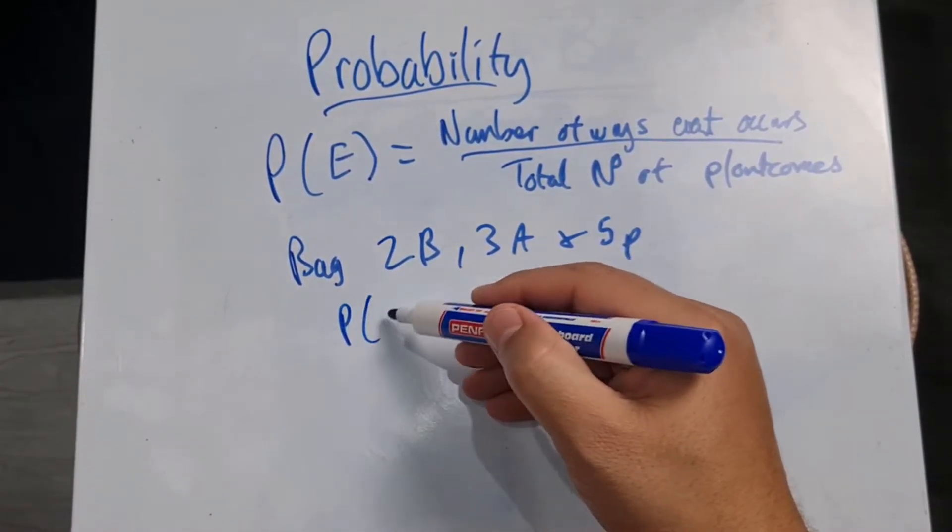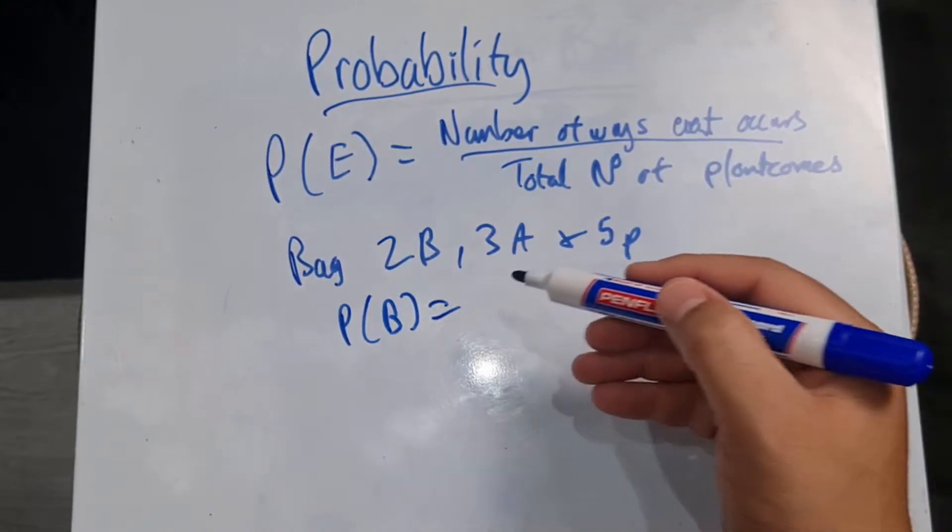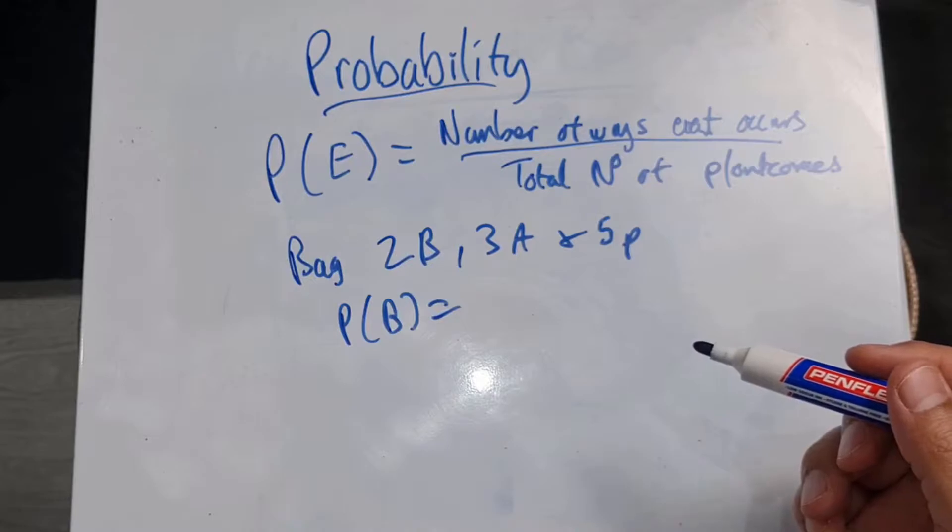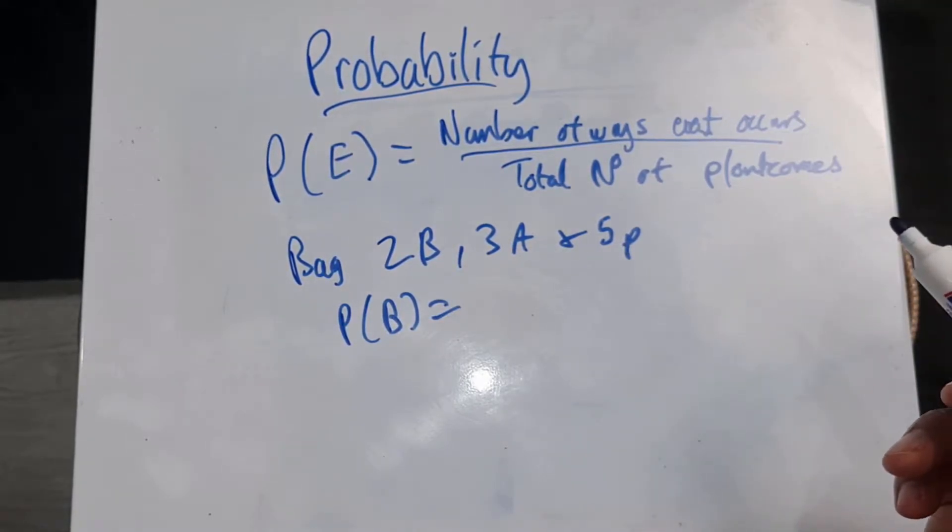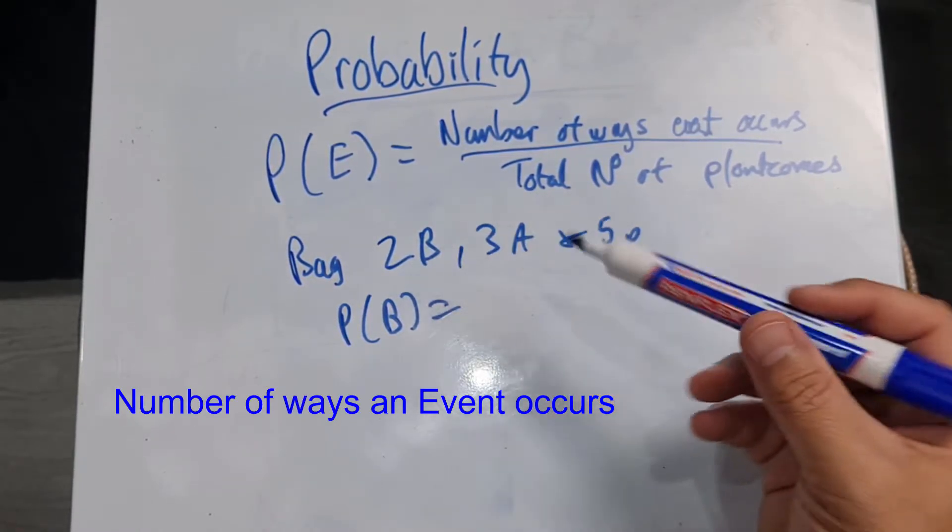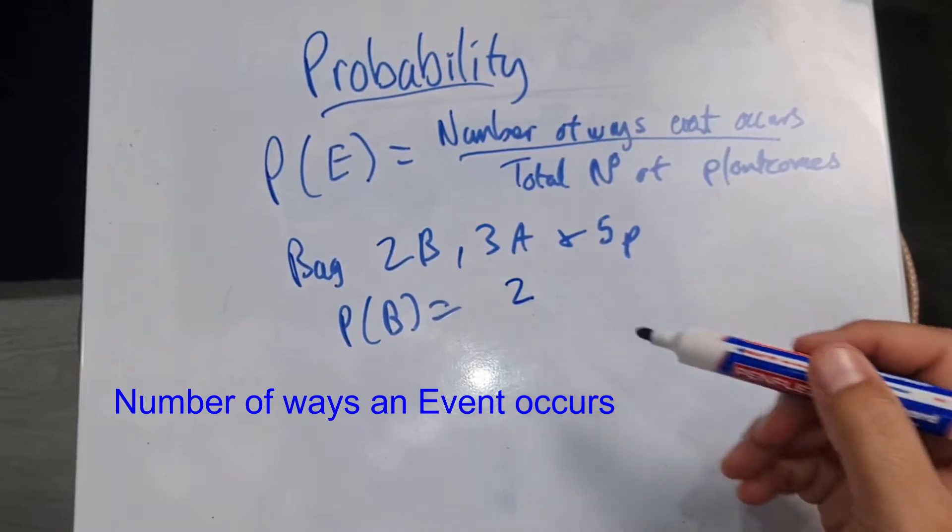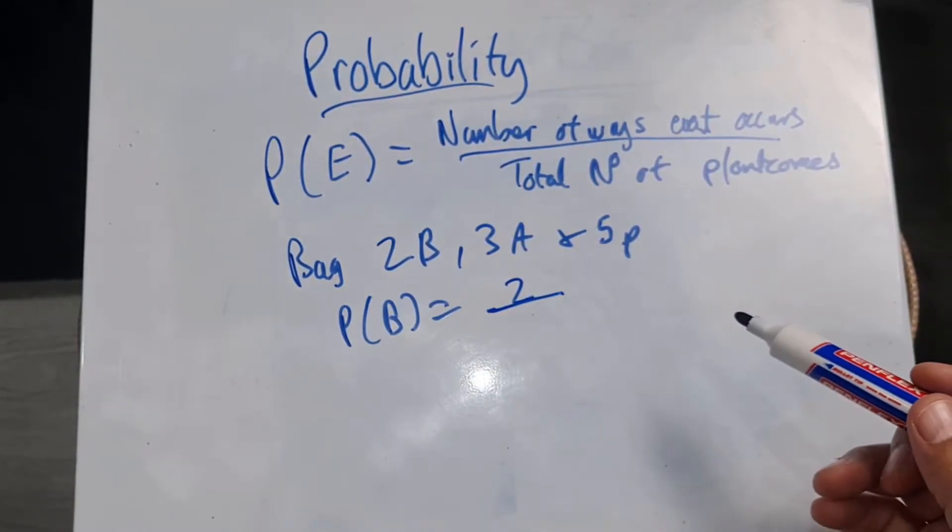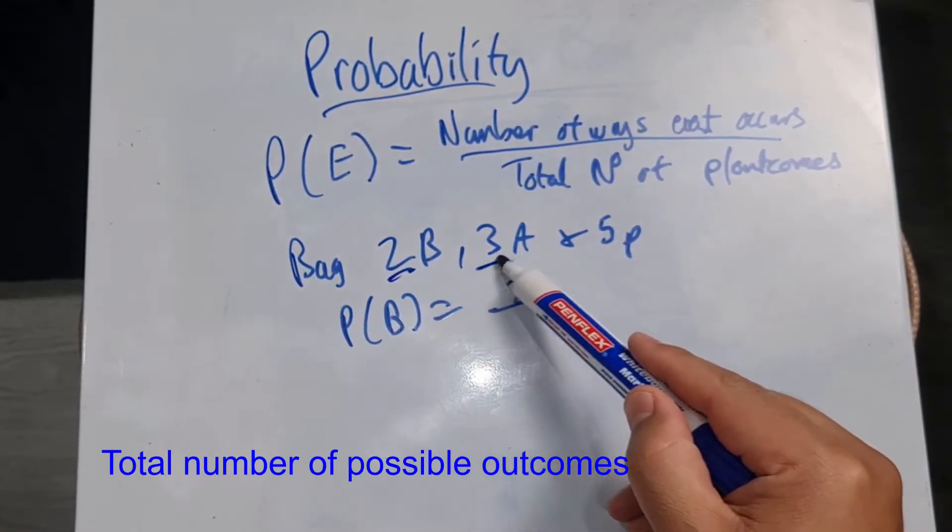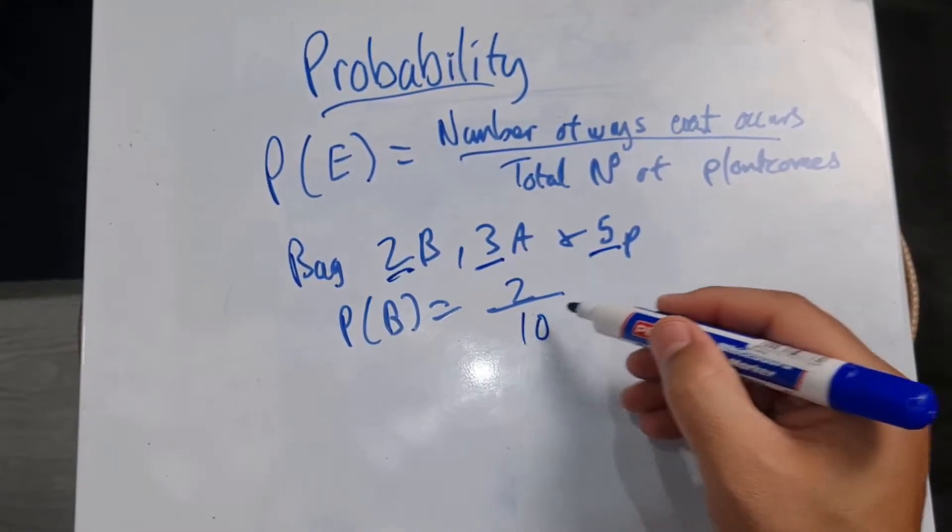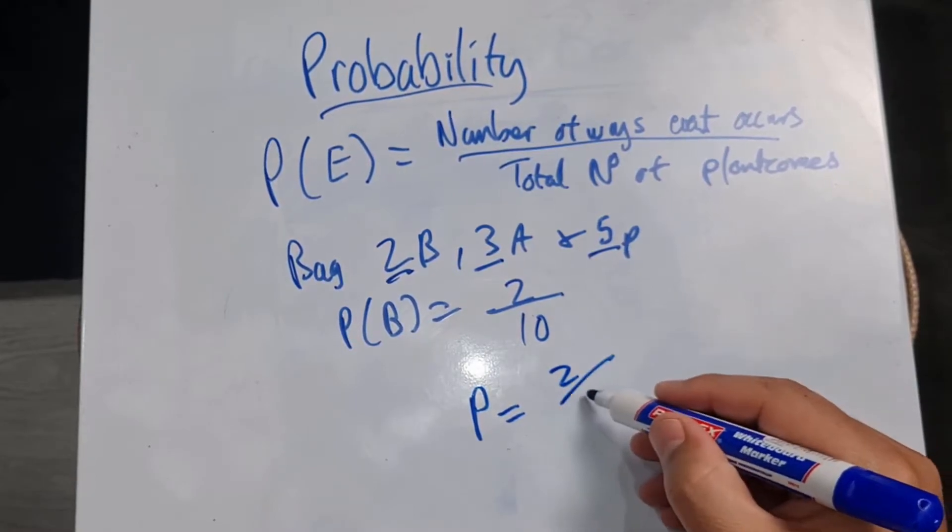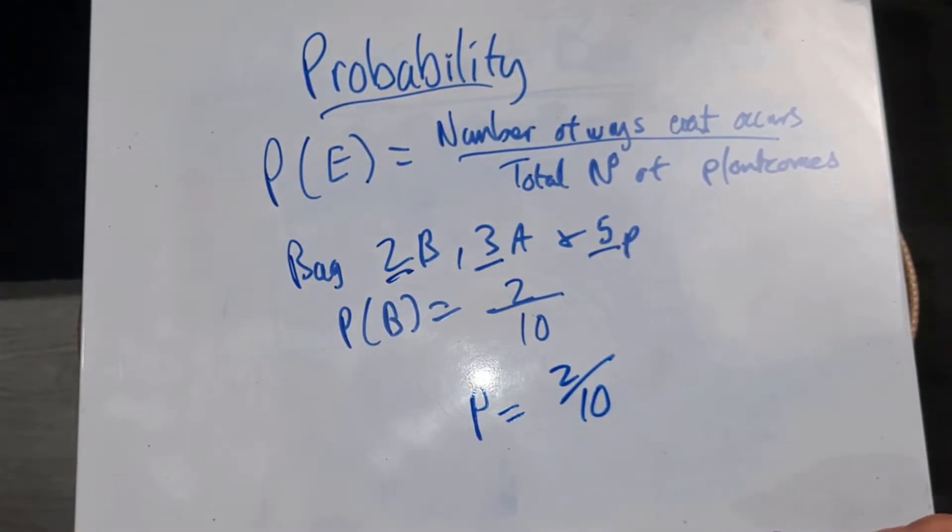So we look at our probability and say, we're looking to find out the probability of choosing a banana and we need to look at the number of ways this event occurs. With our banana, how many ways? We've only got two because we've got two bananas. And then we're going to divide that by the total number of possible outcomes. So we'll take two, three and five and add them together. That gives us 10. So our probability is a two in 10 chance of that happening.